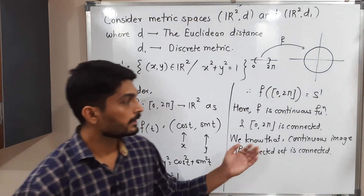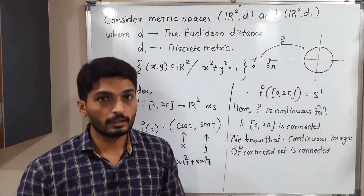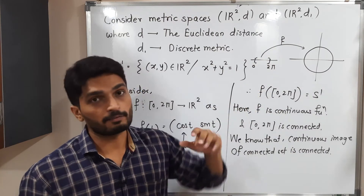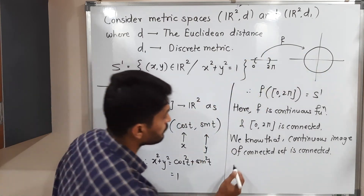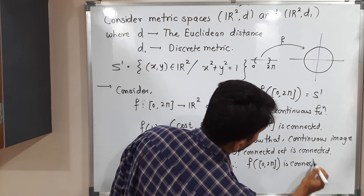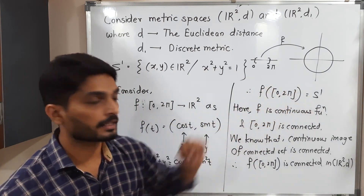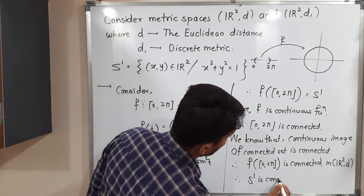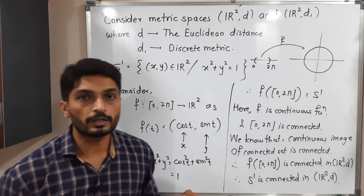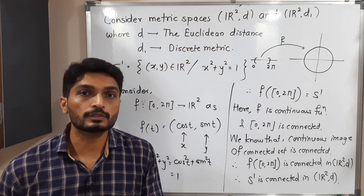Applying this to our situation: the domain [0, 2π] is connected and F is a continuous function, so the image is also connected. Therefore, the image of [0, 2π] under F is connected in R²,D. But we established that F([0, 2π]) is exactly S1. Therefore, S1 is connected in (R², D), where D is the Euclidean metric. That completes the first sub-question.